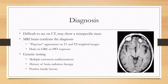For diagnosis, on CT scan these are pretty hard to see and they may show a non-specific mass. However, MRI brain is very characteristic and confirms the diagnosis. You'll see a popcorn appearance on T1 and T2 weighted images, which you can see here. These will also look dark on GRE or SWI sequences.